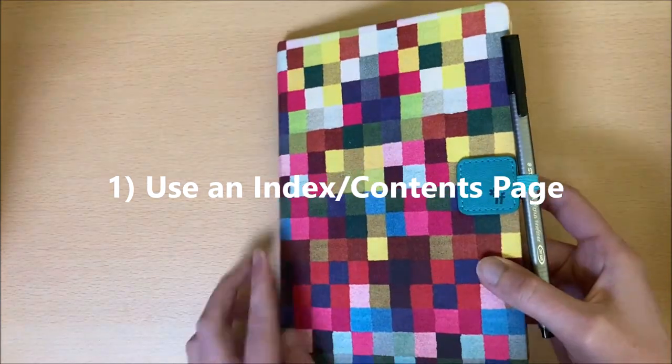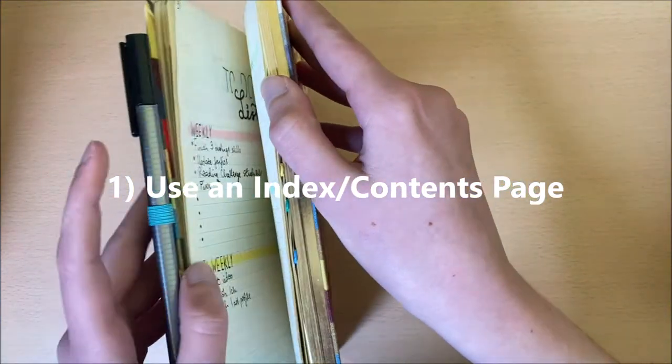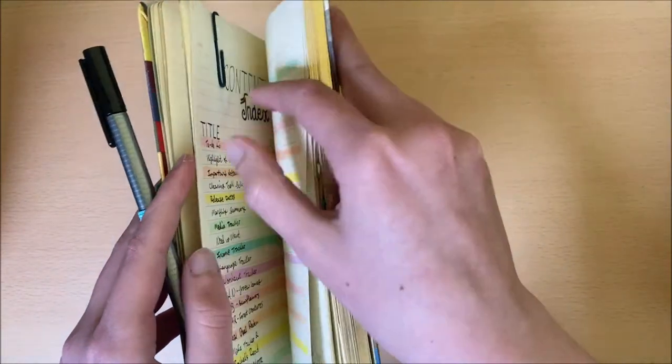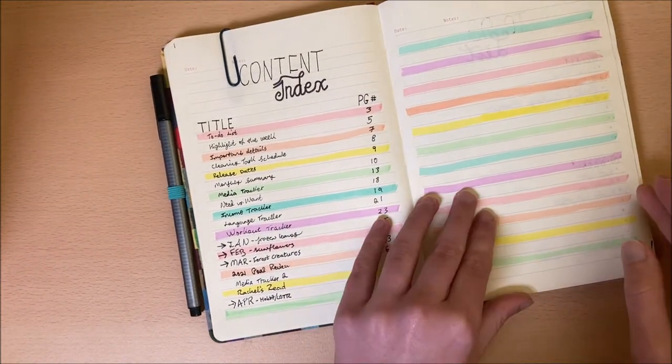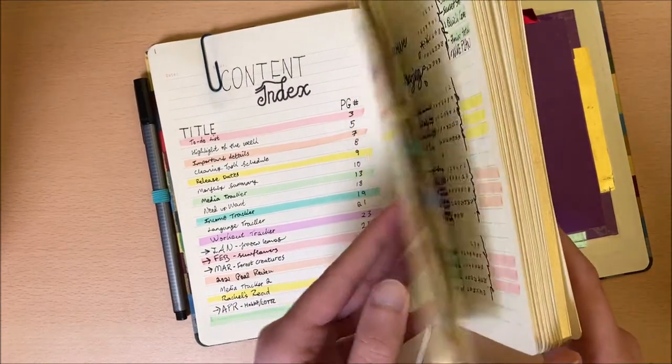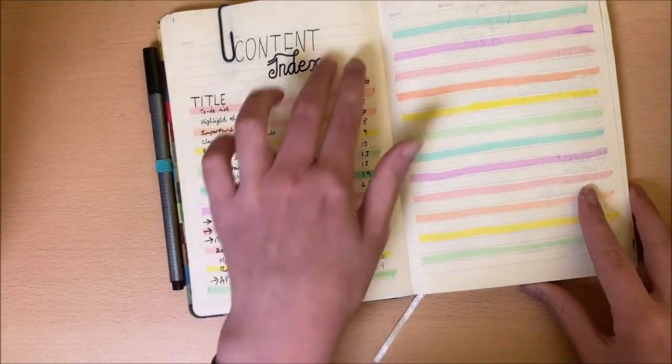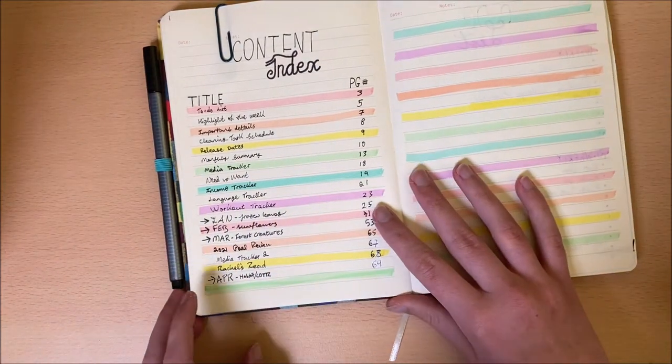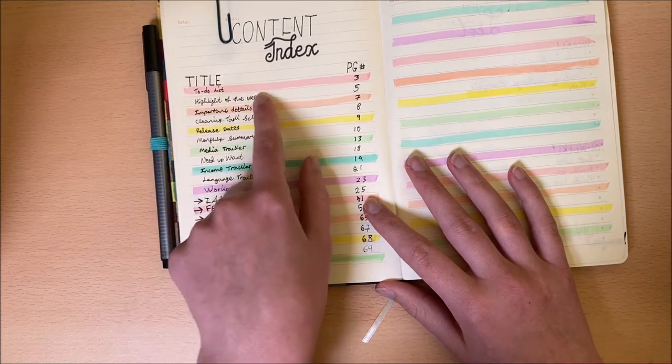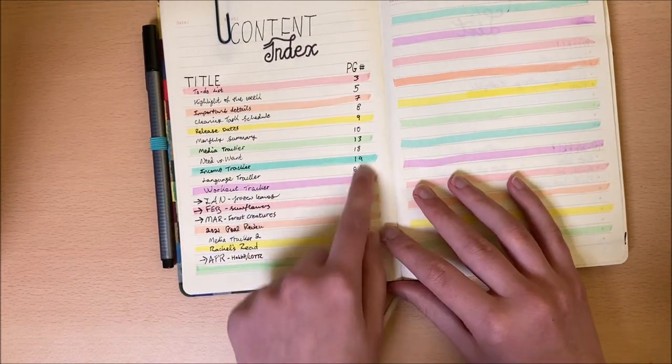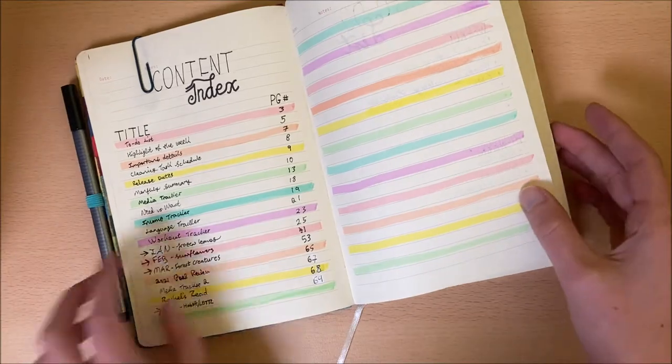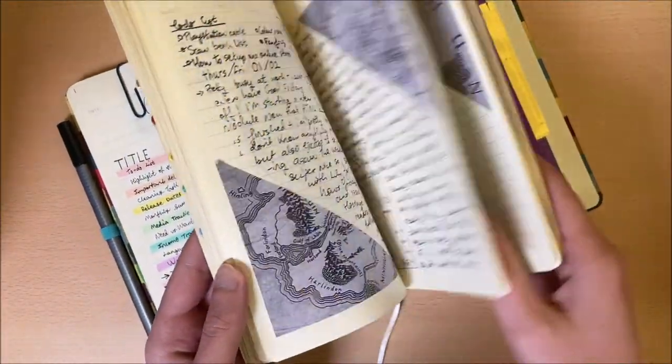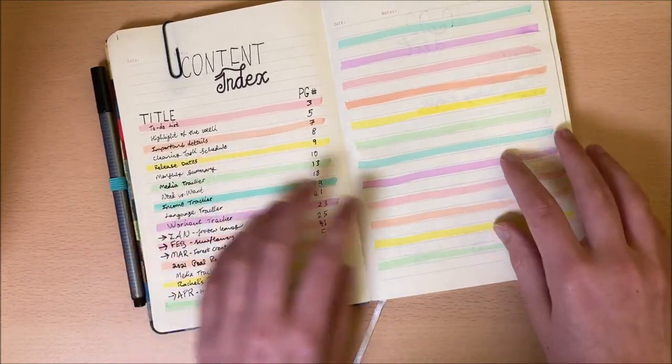So the first tip and trick that I have for you guys is to use an index page. This is something that I never did and I have started to do over the last few years. And let me tell you guys, it is a lifesaver. So separating a page, I have used two pages personally because I still have a lot more pages left in this bullet journal. But you can stick with one page, you can have three, four, however many pages you think you need. This is just a very easy way to keep track of the different parts of your bullet journal, as well as what page you are using. Now this is not an official bullet journal, so none of the pages are actually numbered.